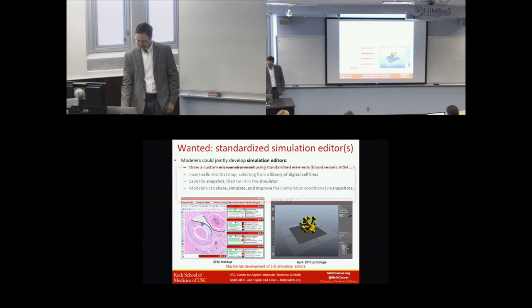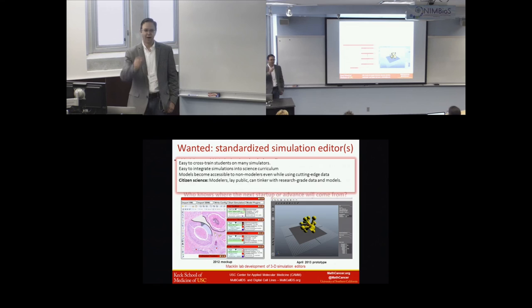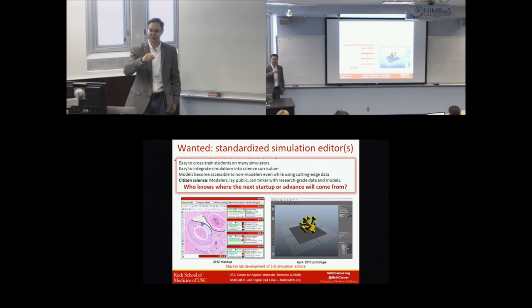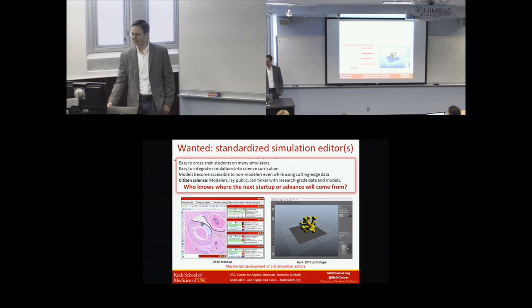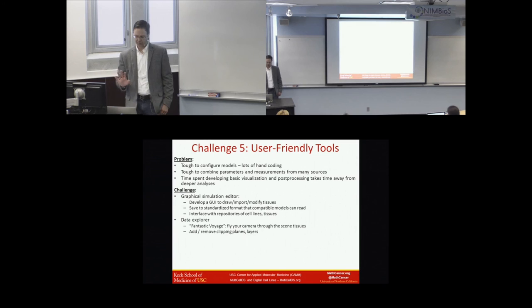I'd also like to see visualization tools. I want Fantastic Voyage for our data — I want to fly my little mini-sub through my scene and look around, fly through blood vessels and extravasate and see what cells are there. I want to set clipping planes with my flying sub and then send it out to ParaView for rendering. Right now, the hardest pain in ParaView is figuring out where to put your camera, the angle and up vector, and setting clipping planes — it's a horrible process. It makes pretty plots but takes forever. The challenge is to make user-friendly tools we can share for configuration, data exploration, and post-processing.